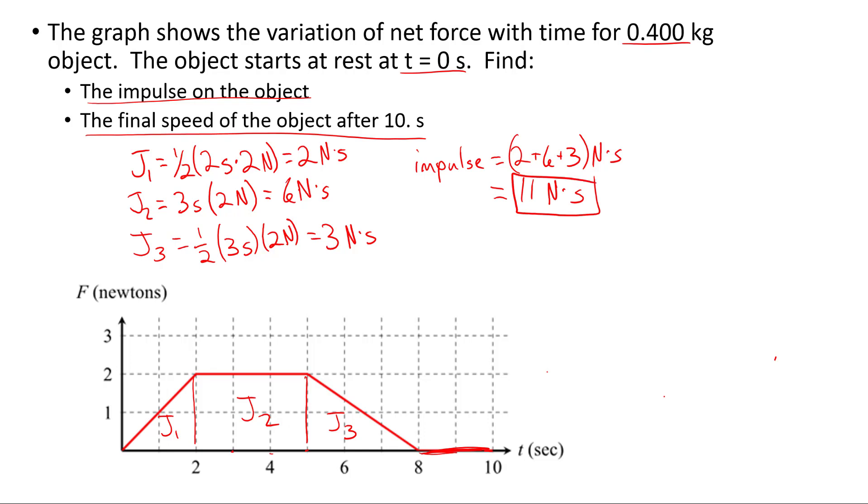If we want to find the final speed of the object, well, it starts from rest. So the final speed is just going to be equal to the change in velocity. We can use impulse as change in momentum, M delta V. So delta V is just impulse over mass, which is 11 newtons over 0.400 kilograms. 11 over 0.4 gives us 27.5 meters per second.